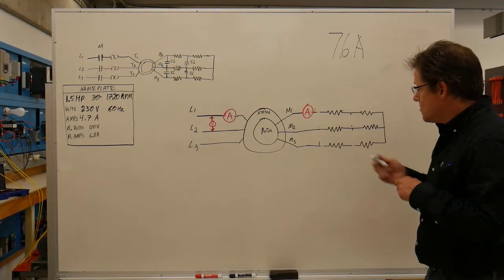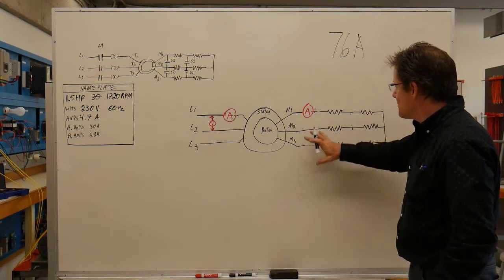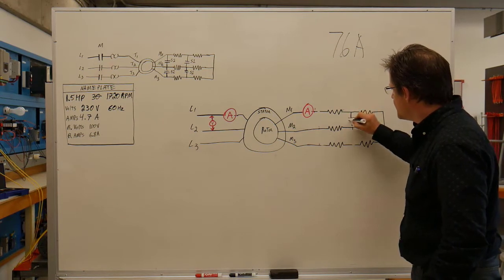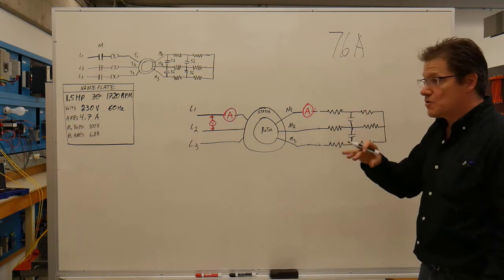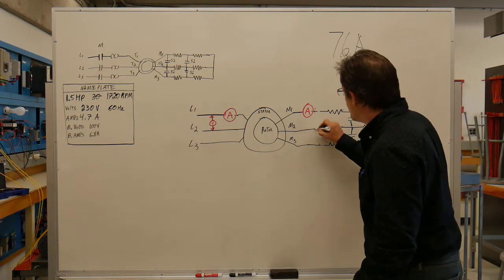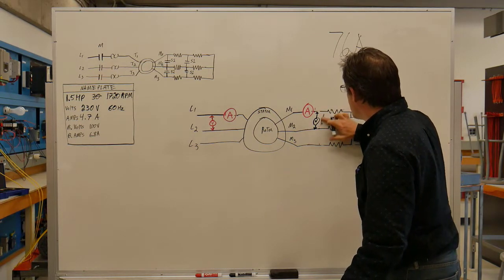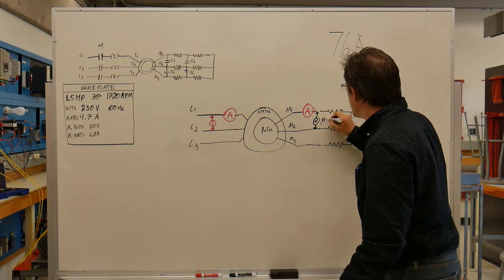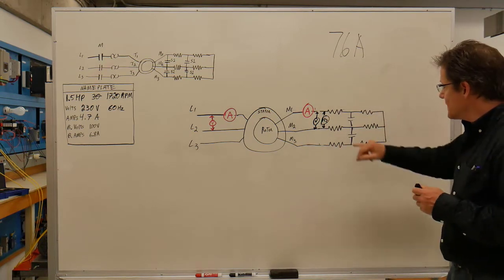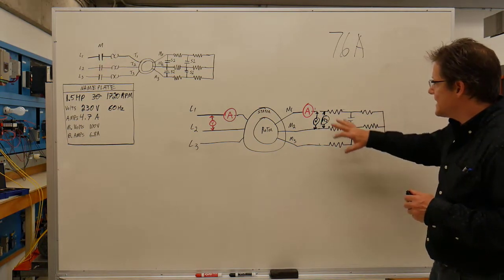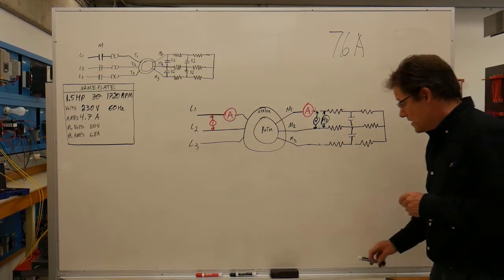While we run without the bypass, we're going to engage these contactors. Then we'll see what our voltmeters and frequency meter tell us. We'll close the first contactor, then bypass all the resistance and see how the voltage, current, and frequency in the rotor change.